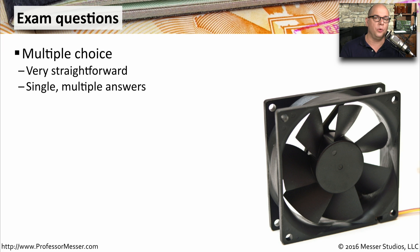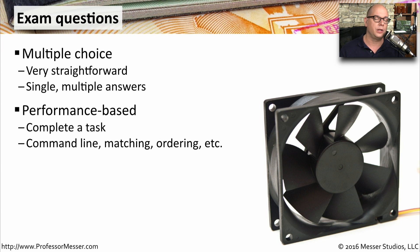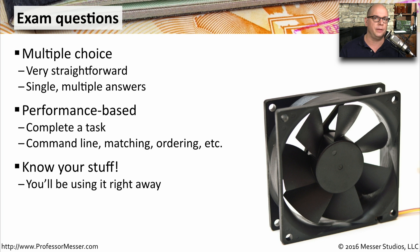The format of the 220-901 and the 220-902 consists of a number of different question types. One is the very common multiple choice — you'll be asked a question with four, five, or six different answers, and you'll need to choose the correct one. But the exam might also include what CompTIA calls performance-based questions. These might be a command line simulation, matching different items together, ordering things in ascending or descending order, and other question types as well. So make sure you understand everything on the exam objectives before you walk in so you're prepared for whatever question might be asked.